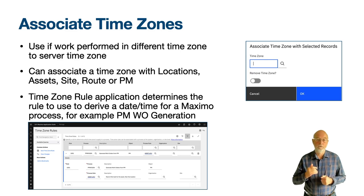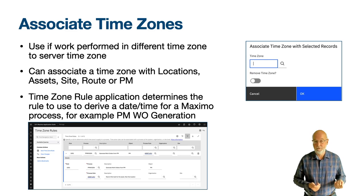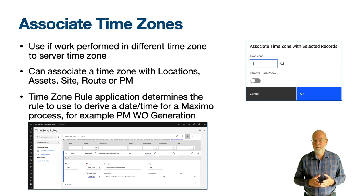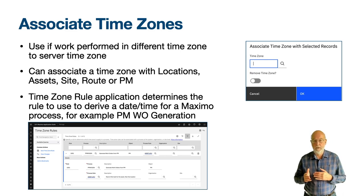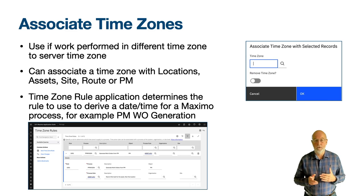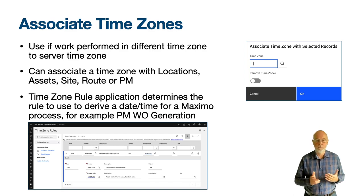For example, use the time zone associated with the asset, otherwise use the time zone associated with the location. The time zone does not exist in the locations or asset objects but in an object called record time zone. You could display the current time zone on a location or asset record by using the relationship and attribute notation record time zone dot time zone.